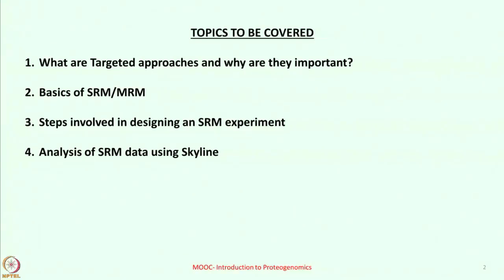Let us now dive deep into what targeted approaches are and why they play such an important role in the field of proteomics. So far you have learnt about the shotgun proteomics approaches, wherein the abundance of the peptides detected at the MS1 level determines which peptides get fragmented at the MS2 level. Upon fragmentation at MS2, the identity of the peptide can be known and subsequently mapped to the proteins they come from. The shotgun proteomic approaches largely rely on the abundance of the peptides, and one inherent problem is that peptides of low abundance usually go undetected. Hence, the identity of all proteins may or may not be possible using shotgun approaches.